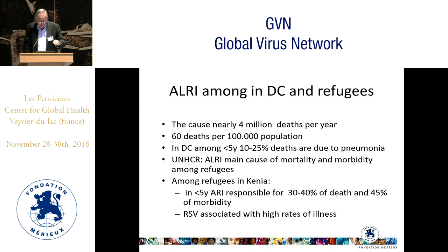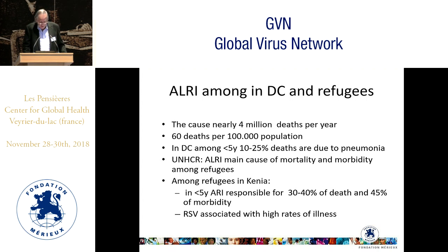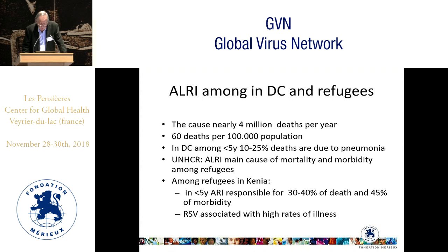Turning to respiratory infections — specifically lower respiratory tract infections, where the mortality lies. In developing countries including refugees, they cause nearly 4 million deaths per year, or 60 deaths per 100,000 population. Among under-fives in developing countries, up to 25% of deaths are related to pneumonia. UNHCR figures show lower respiratory tract infections are the main cause of morbidity and mortality among refugees worldwide. Data from Kenya shows respiratory infections responsible for 30–40% of deaths and 45% of morbidity in under-fives. RSV is high on the list in this age group, which is not surprising.